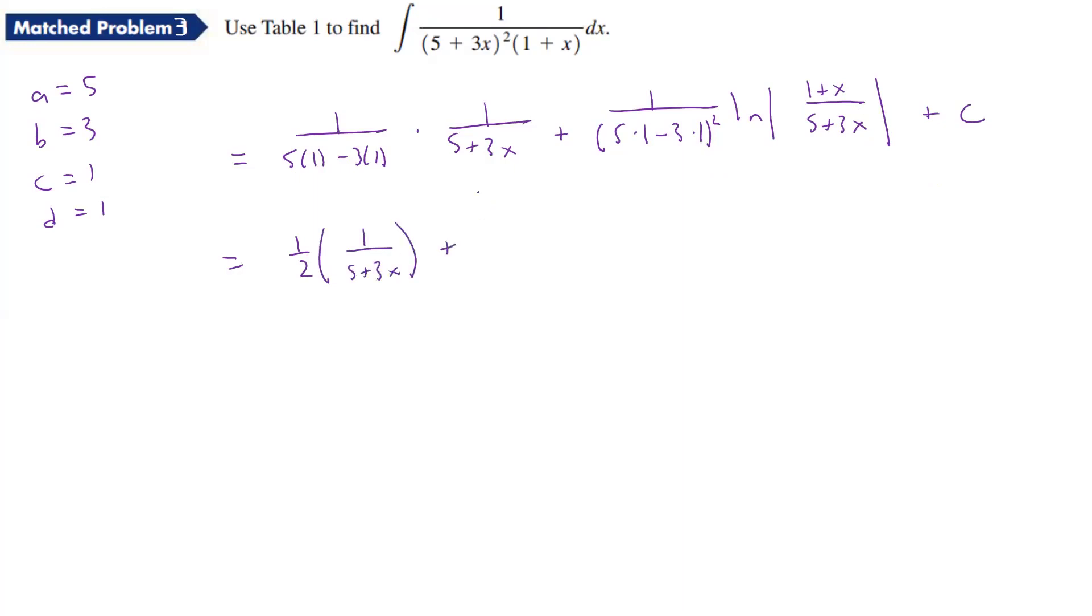And here I'm going to have 5 minus 3 is 2 squared, so it's going to be 1 over 4, then I'll have LN of 1 plus X over 5 plus 3X plus C.